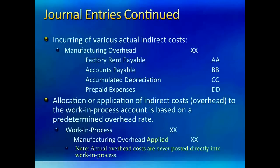Note two things here. First, actual manufacturing overhead expenses have nothing to do with the work in process account — they are not taken to work in process at all and are not charged to jobs. Second, the debit side of manufacturing overhead, which is actual overhead, is not likely to equal the credit side, which is applied overhead. Since the account must be closed at year end, any difference between the two sides will require an adjusting entry, which we will discuss shortly. For now, let us stay with entries in our work in process account.